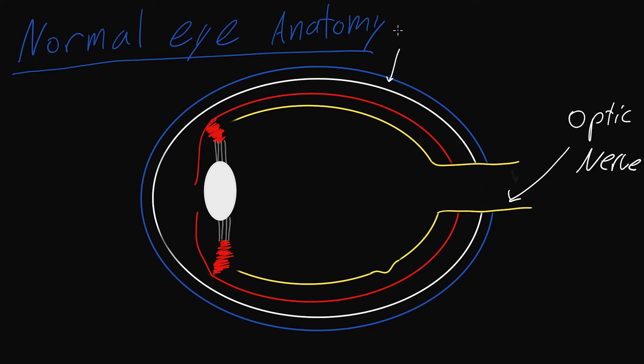One is going to be the sclera, which is the white part of your eye that you see. Two is going to be the choroid, which is going to be the vascular layer that provides vessels to a lot of the eye.